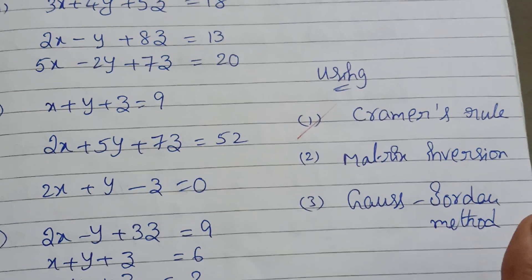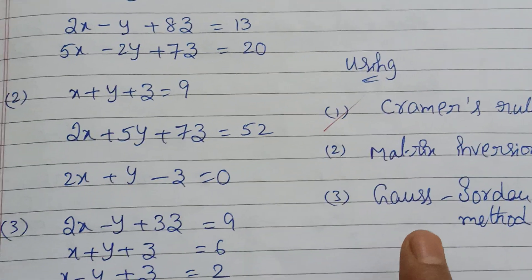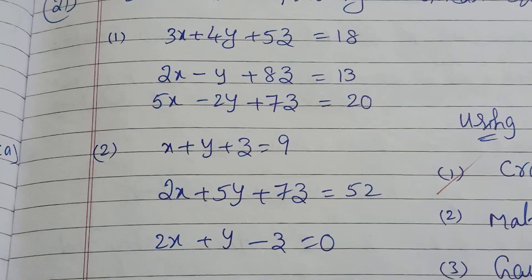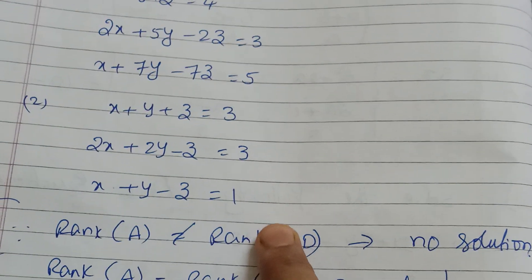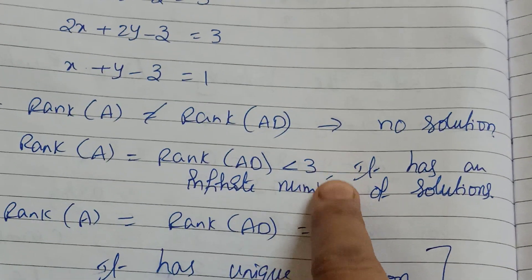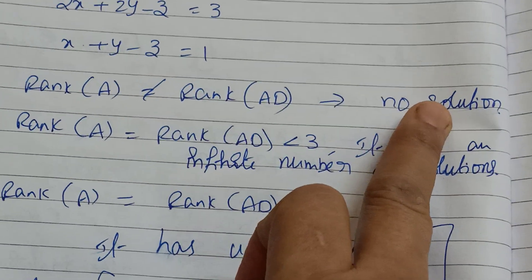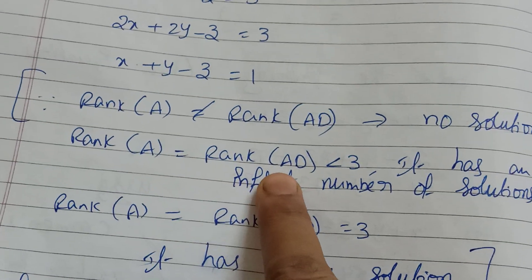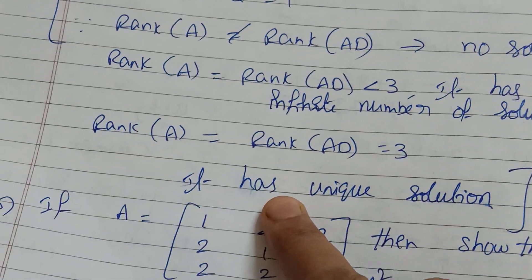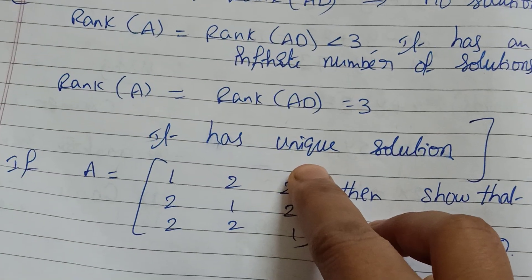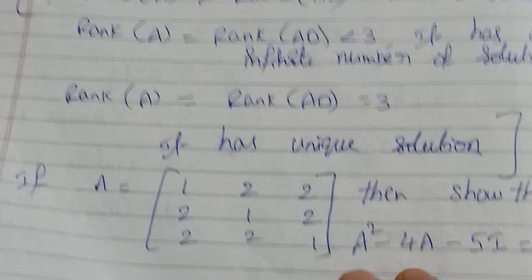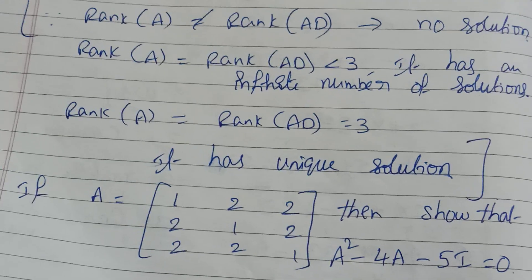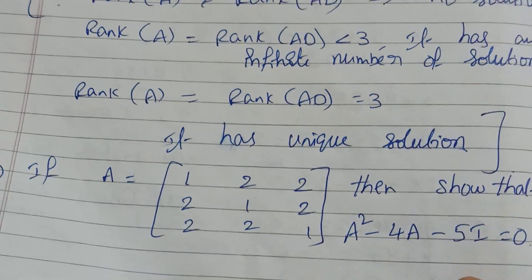This one is consistent and you can do it with transformation. How are you consistent? Rank of A — if rank of A is not equal, there is no solution. If rank of A is less than 3, there are an infinite number of solutions. If rank of A equals 3, it has a unique solution. Okay, consistent — check that.